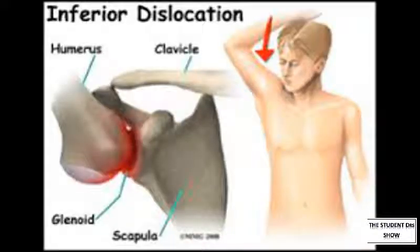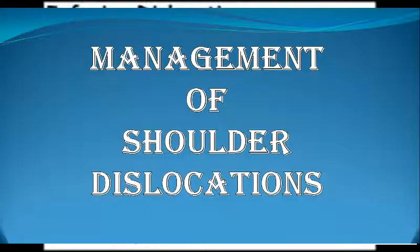Inferior shoulder dislocations, also known as luxatio erecta. This is a very rare dislocation that results from hyperabduction of the shoulder. Often with this kind of dislocation, neurovascular injury is common. Closed reduction is required.